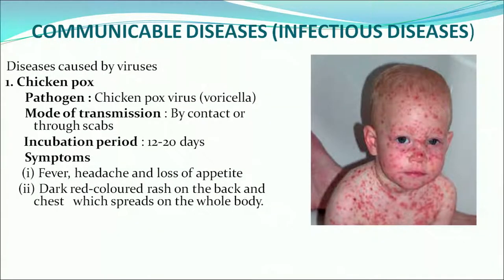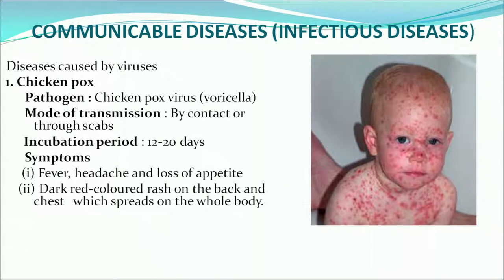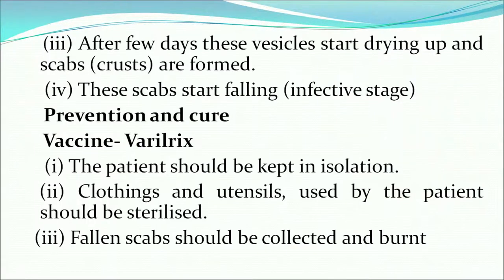Now we will discuss these diseases one by one. First is chickenpox. Its pathogen is the chickenpox virus, called varicella. Mode of transmission happens through scabs, and the incubation period varies from 12 to 20 days. Symptoms are fever, headache, loss of appetite and dark red colored rashes on the back and chest. You can prevent it through the varicella vaccine. The patient should be kept in isolation, clothing and utensils sterilized, and fallen scabs collected and burnt.